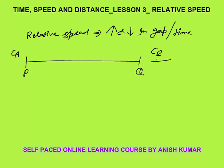Car B is travelling from point Q to P at a speed of 40 km per hour. Car A is travelling from P to Q at a speed of 60 km per hour. Let's assume that the initial gap PQ is 300 km. Now, when they start moving, they are moving simultaneously.